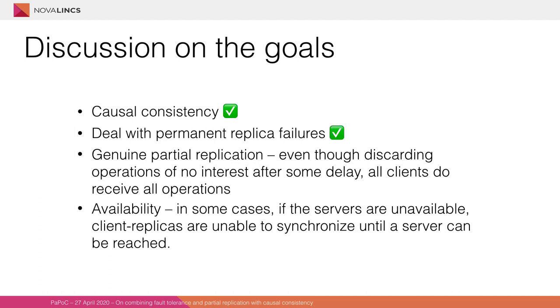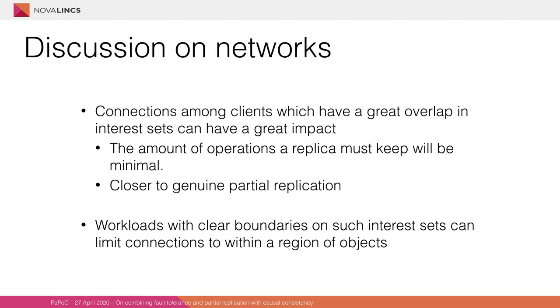Now, in terms of goals, we can implement causal consistency, and we can deal with permanent replica failures of client devices. But in terms of partial replication, even though we are discarding operations that we have no interest in, we do receive every single operation. And in terms of availability, in some cases, if we are very aggressive with our garbage collection, then client replicas can only synchronize with each other if a server can be reached. Now, notice that storing dependencies on operations that we have no interest in is something that only happens if you're connected to clients that have objects that you have no interest in. So, when there's a great overlap in interest, we are very close to a genuine partial replication.